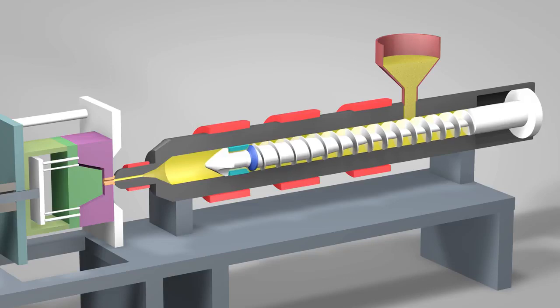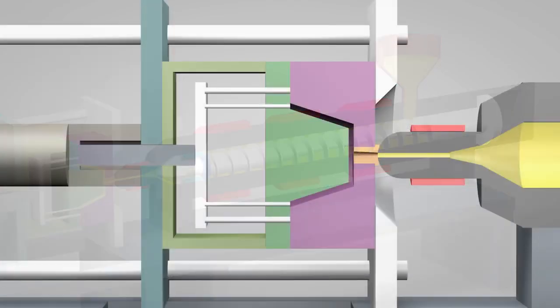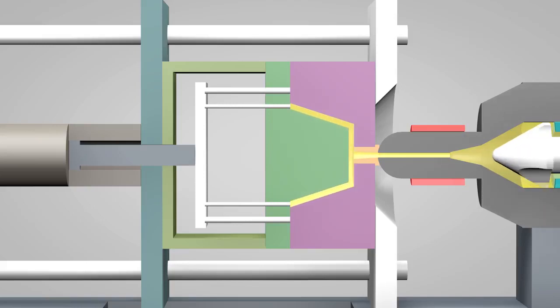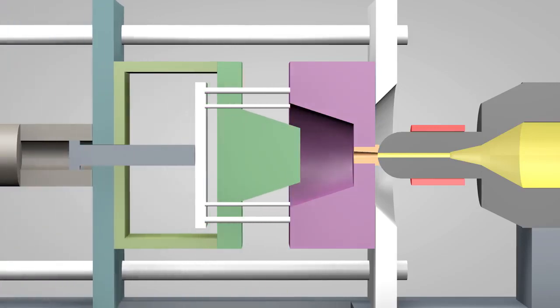Once enough molten plastic is in front of the screw, it ramps forward like the plunger of a syringe. In a matter of seconds, the screw injects the molten plastic into the empty part of the mold called the cavity image. The plastic solidifies in under a minute. The mold opens and the part is ejected. The mold then closes and the process repeats.